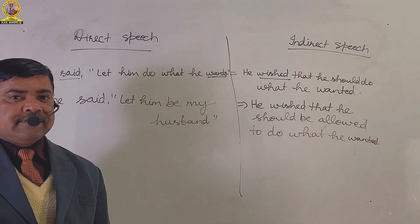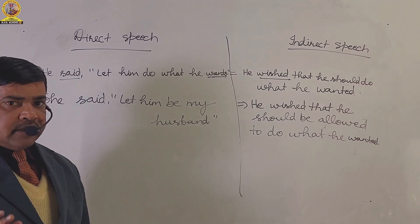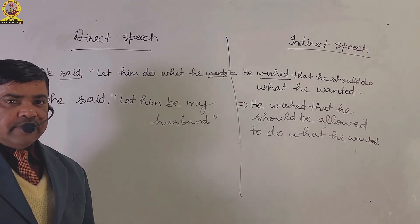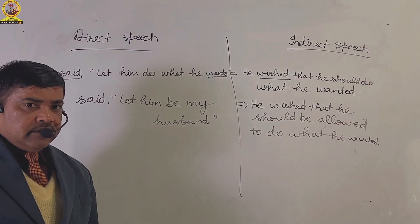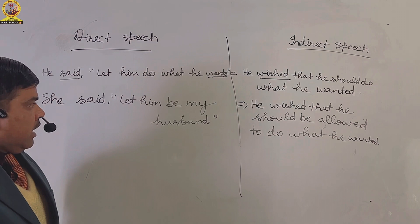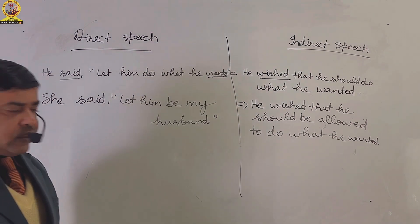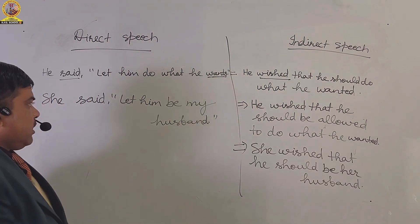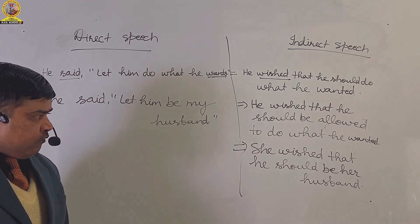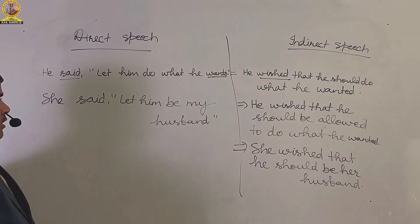As the last example, in direct speech I have taken the sentence: 'She said, let him be my husband.' The indirect speech of the given sentence in direct speech will be: she wished that he should be her husband. Now, you can take its screenshot.